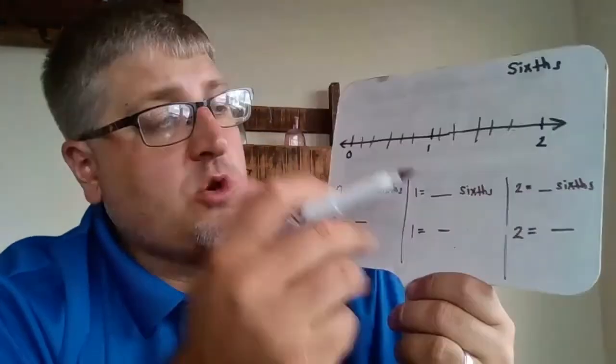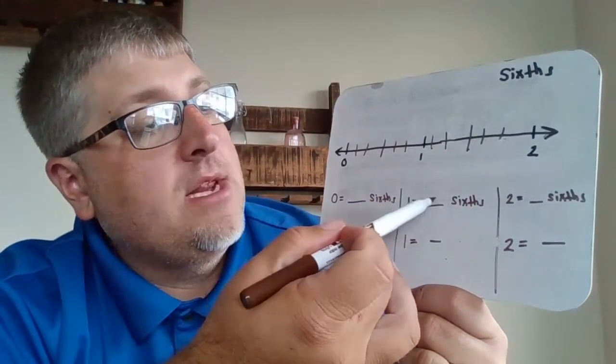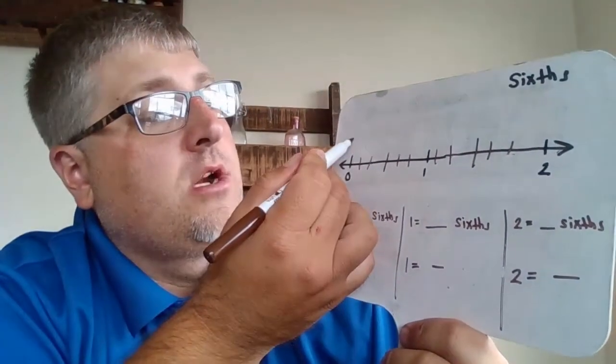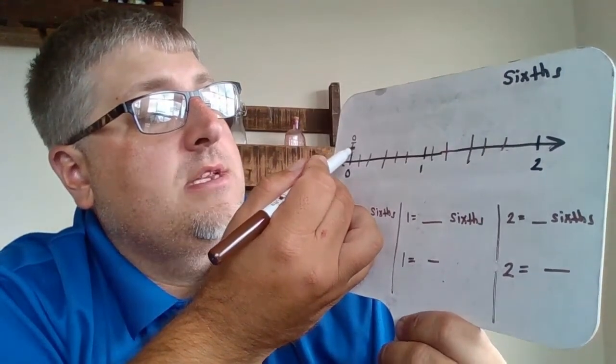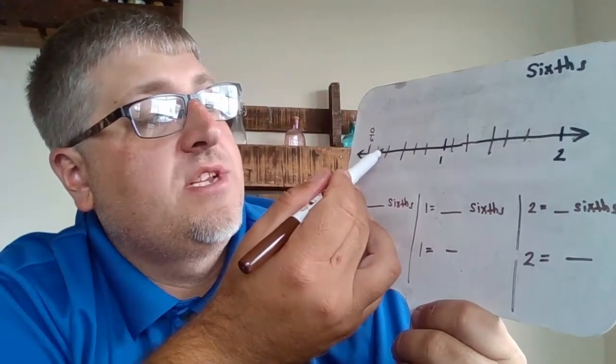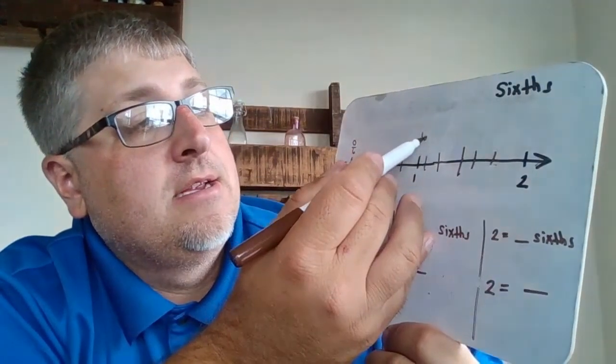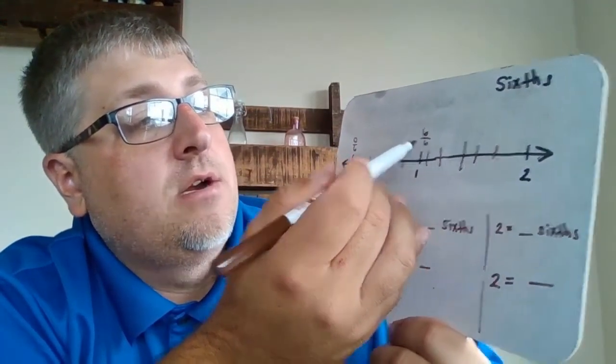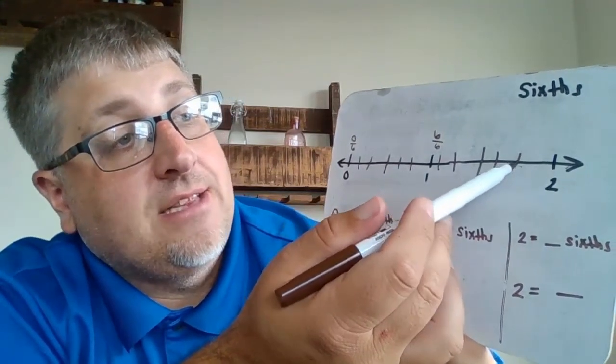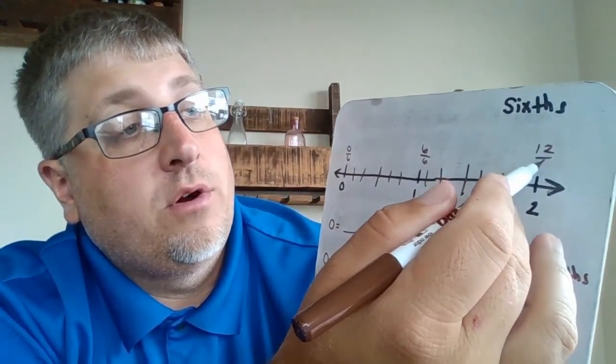Our questions down here want to know zero equals how many sixths, one equals how many sixths, and two equals how many sixths. So we know right here we can go, that's going to be 0/6. And then we got 1/6, 2/6, 3/6, 4/6, 5/6, and then 6/6 here. 7/6, 8/6, 9/6, 10/6, 11/6, and then over here we have 12/6.